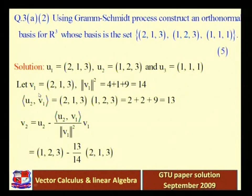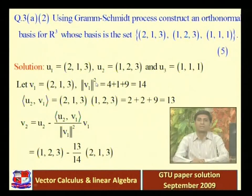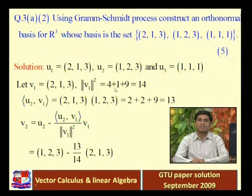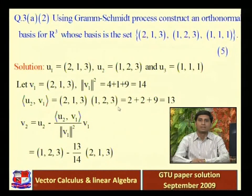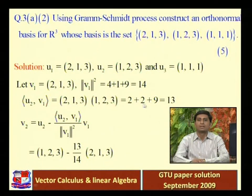Starting with v1 = (2,1,3). Norm v1 squared equals 4 + 1 + 9 = 14, the sum of squares of each coordinate. To find v2, we first compute inner product <u2,v1>, which is the dot product of u2 = (1,2,3) with v1 = (2,1,3): 1·2 + 2·1 + 3·3 = 2 + 2 + 9 = 13.